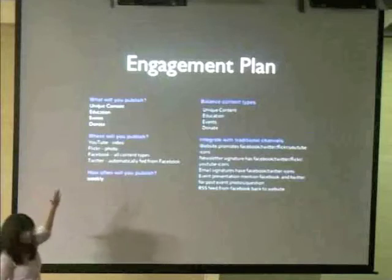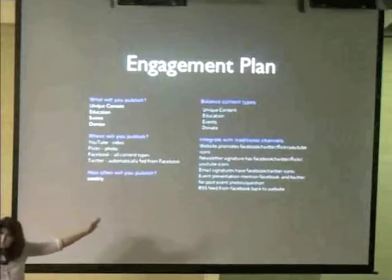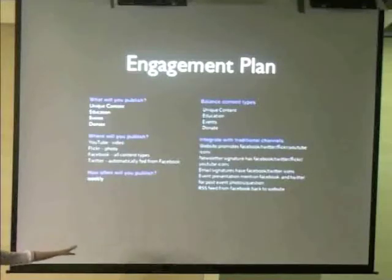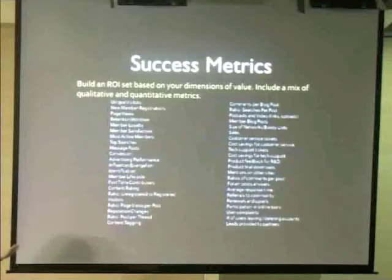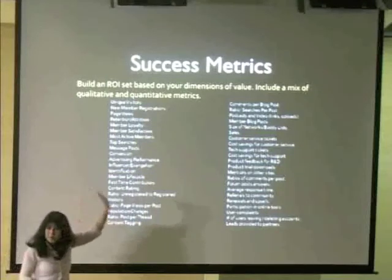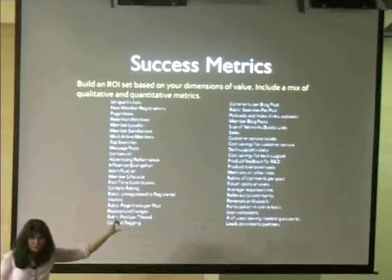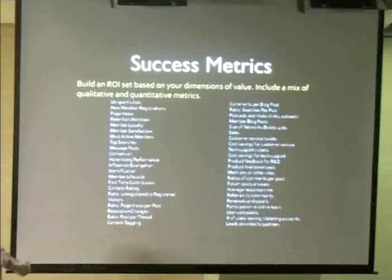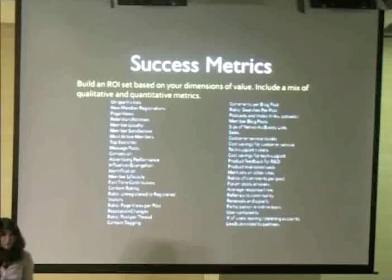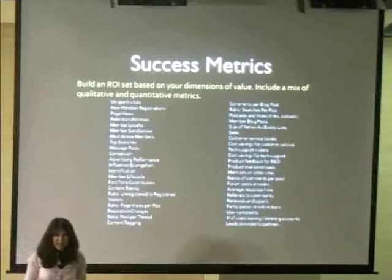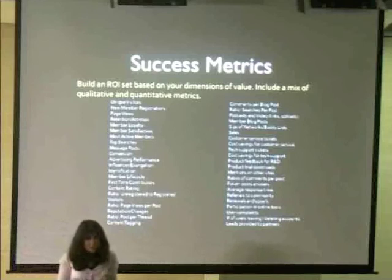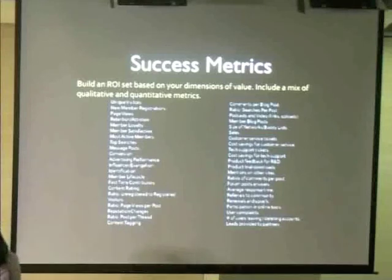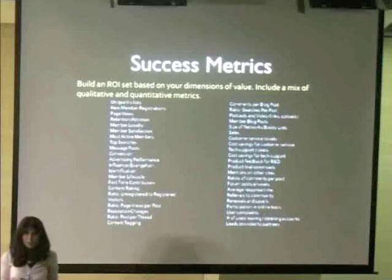Any good startup, any good entrepreneur needs to figure out what their engagement plan is. You need to have success metrics — whether it's content rating, visitors, or member satisfaction. Pick one, then test and see if you can move the number. If you can move the number, you know you've got something. If you're doing an intervention and the number doesn't move, stop doing that. The process is trial and error: what is it that I want people to do? Is it engagement? Is it a retweet? Is it getting them to show up at Tahrir Square on January 25th? Figure out what the number is and test for it.